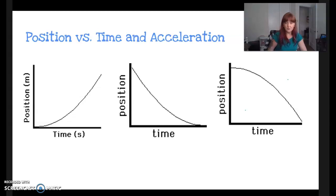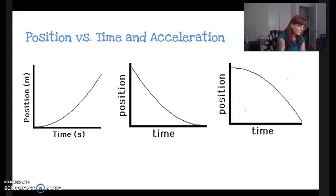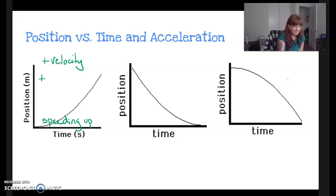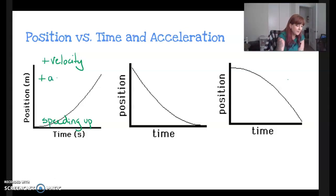Looking at these parabolic graphs, we want to know about velocity and acceleration. For this first graph, we have a positive change in position — moving in the positive direction — so we have a positive velocity. It starts off with a low slope and then the slope gets bigger and bigger, so this object is speeding up. That means it has positive acceleration: velocity starts off less positive, then gets steeper and steeper. If the slope is becoming more positive, we have positive acceleration too.